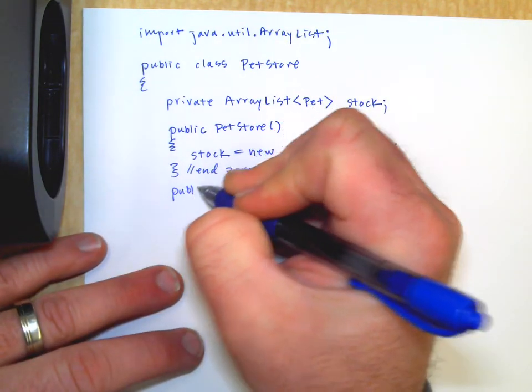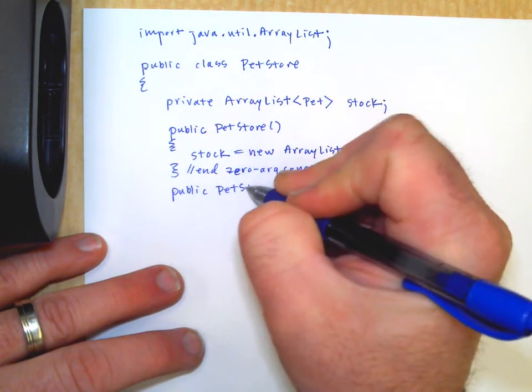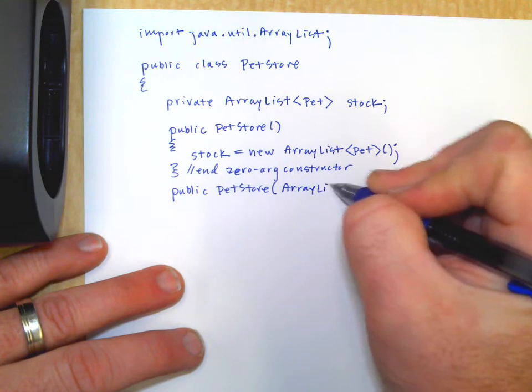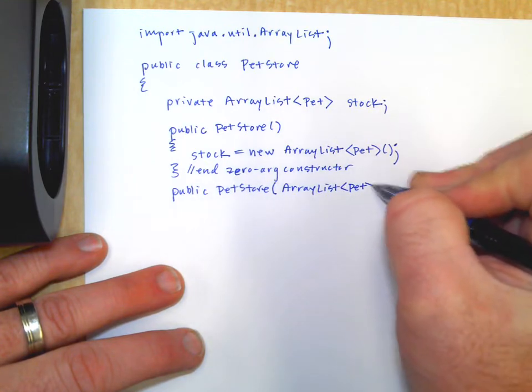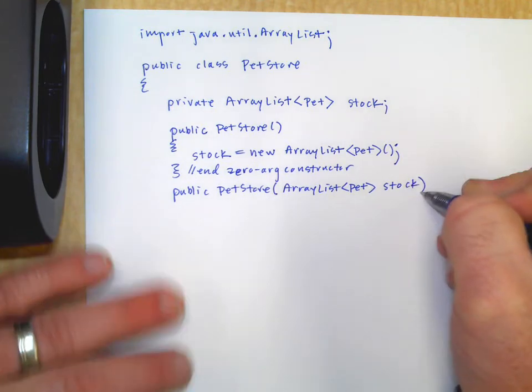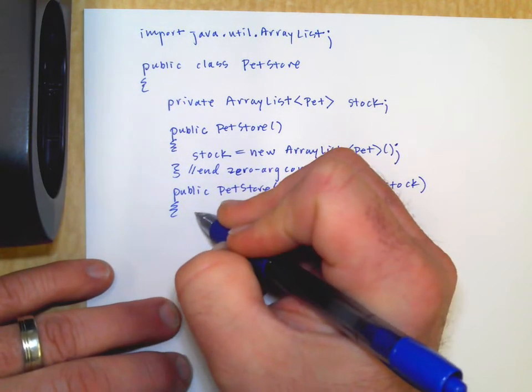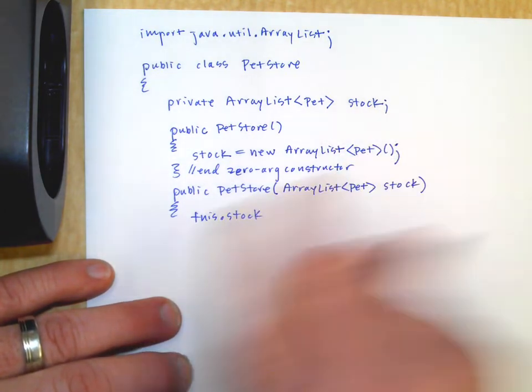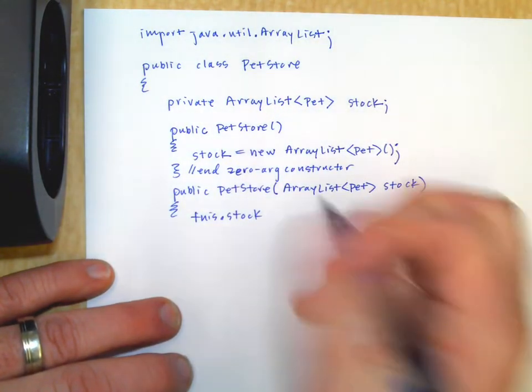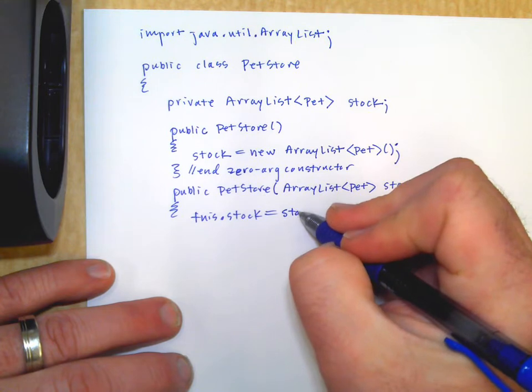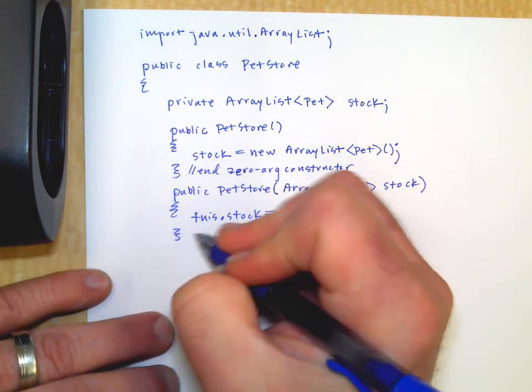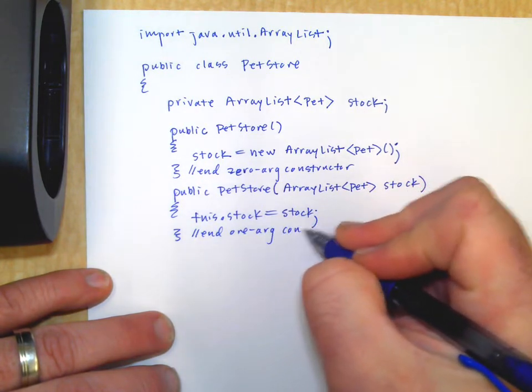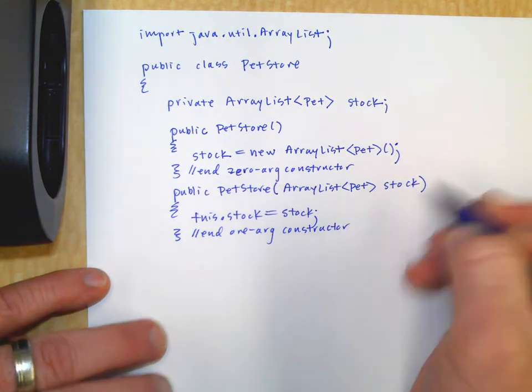Okay. Let's do another one. Public pet store. So these are constructors. Now this time I'm going to expect an array list of pet objects. And we could call it stock. Also the same name. We were just talking about that. And then here we'd say this.stock. So that we know that the stock that we're talking about right here is the stock private instance variable equals the stock that we just got as an argument.